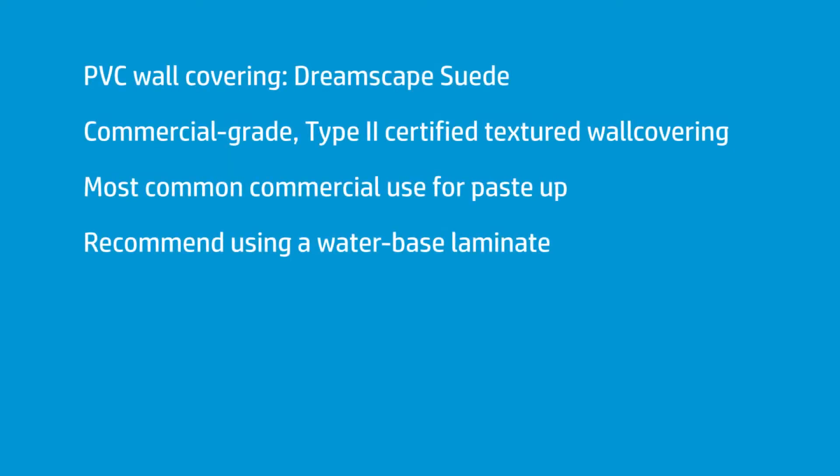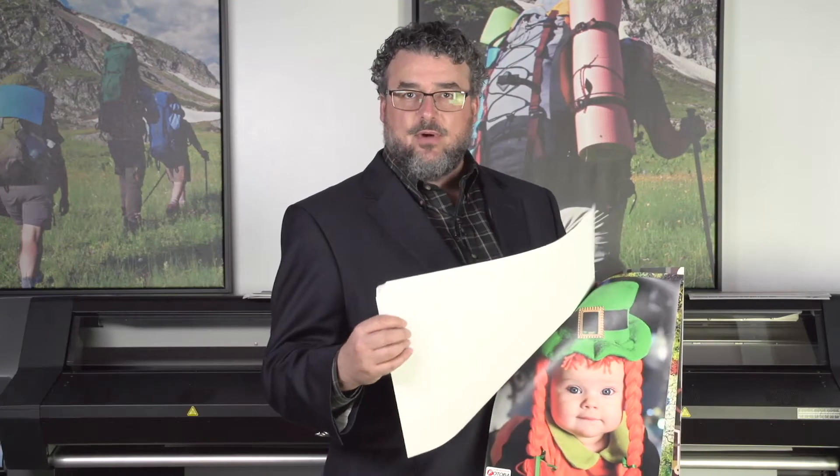The quality is there across the board — whether it's PVC, non-wovens, or removables, the quality on wall coverings is fantastic. But there are some considerations I really want to communicate so you understand what the industry expects before you go headlong into wall covering printing. This is your traditional PVC wall covering — the big daddy of commercial wall coverings. This is a Dreamscape suede, a very well-known, successful product. This is a commercial-grade, Type 2 wall covering.